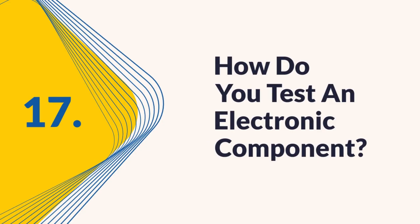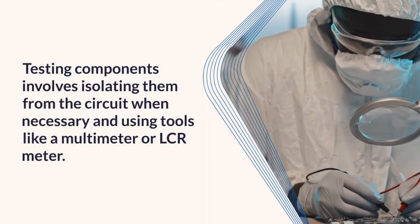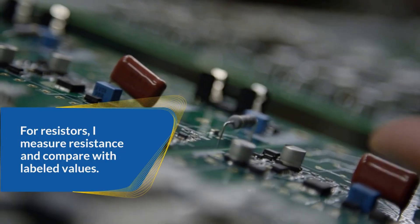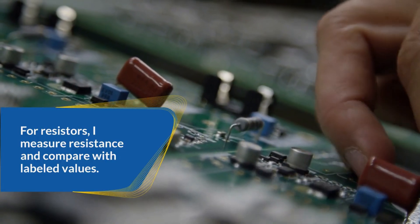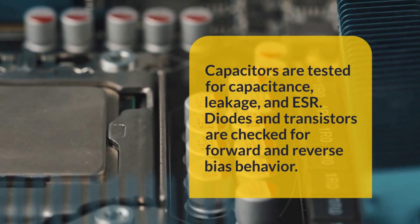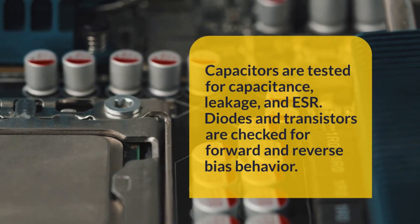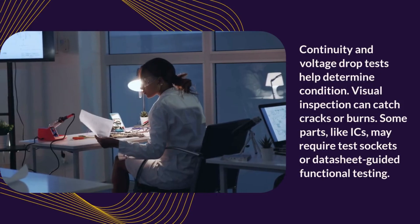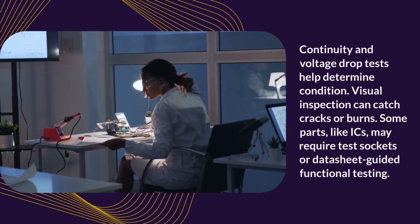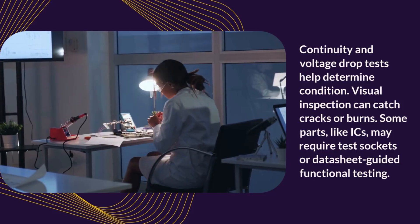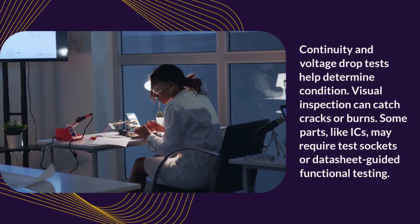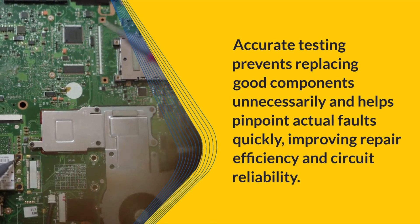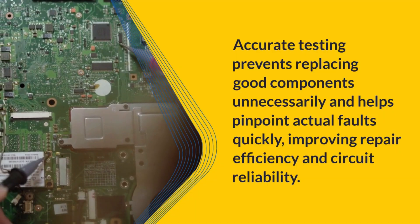Question 17: How do you test an electronic component? Testing components involves isolating them from the circuit when necessary and using tools like a multimeter or LCR meter. For resistors, I measure resistance and compare with labeled values. Capacitors are tested for capacitance, leakage, and ESR. Diodes and transistors are checked for forward and reverse bias behavior. Continuity and voltage drop tests help determine condition. Visual inspection can catch cracks or burns. Some parts, like ICs, may require test sockets or datasheet-guided functional testing. Accurate testing prevents replacing good components unnecessarily and helps pinpoint actual faults quickly, improving repair efficiency and circuit reliability.